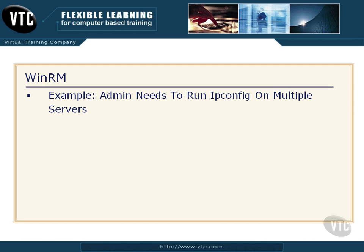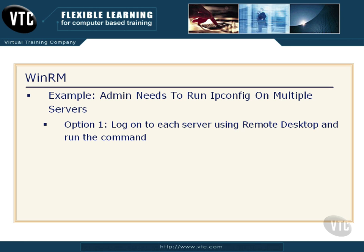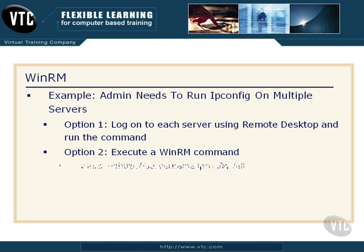Let's talk about why WinRM is such a neat feature. Say you're an administrator and you want to run ipconfig on multiple servers to verify their IP addresses. You could log on to each server using remote desktop and run ipconfig, or physically go to every server. Or, option 2: execute a WinRM command from your own command prompt. It looks like: WinRS -r [server name] and then your command. You will see the results show up in your command window.